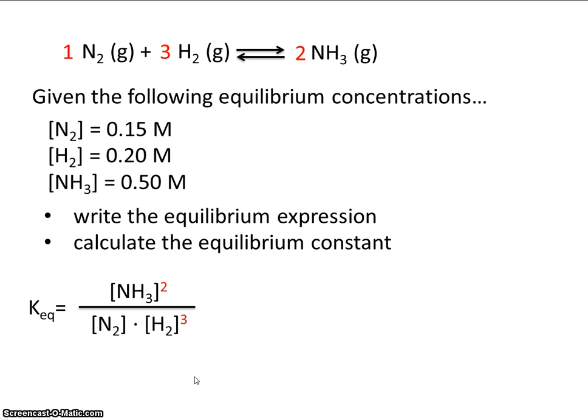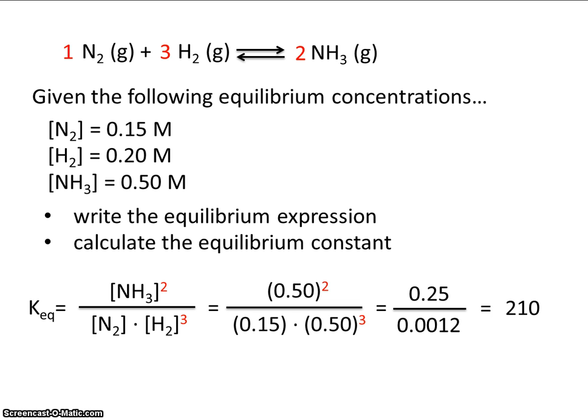So let's plug in the concentrations. Now, if you crunch the numbers, what you would discover is that the equilibrium constant is 210. Remember what that tells us? Well, that tells us that this reaction is product favored, that it lies to the right, meaning if you mix nitrogen and hydrogen, most of the nitrogen and hydrogen will be converted to ammonia.